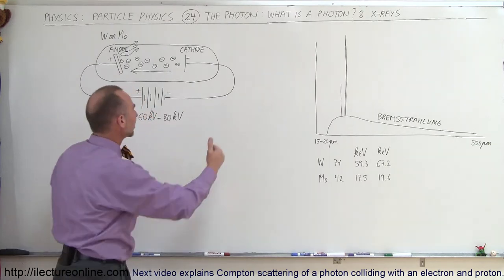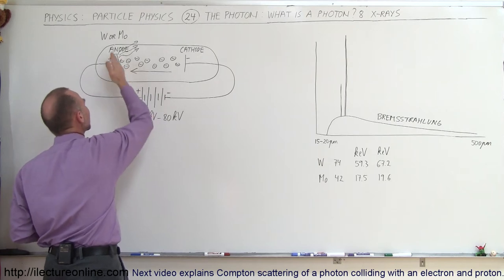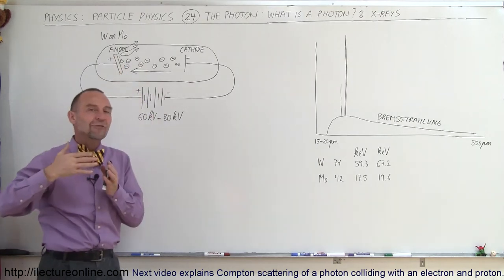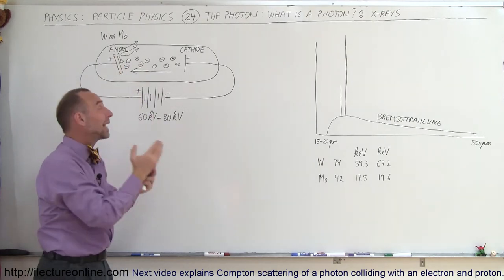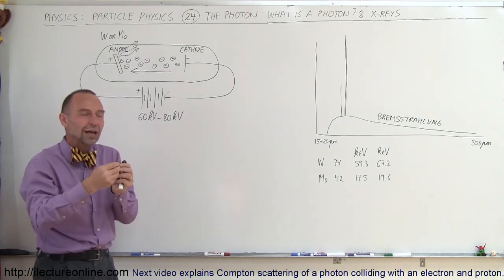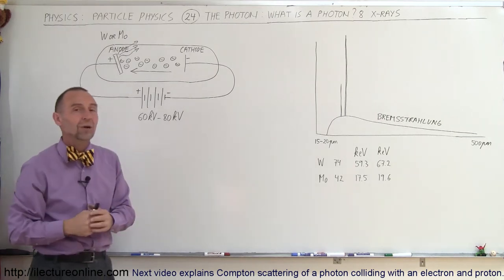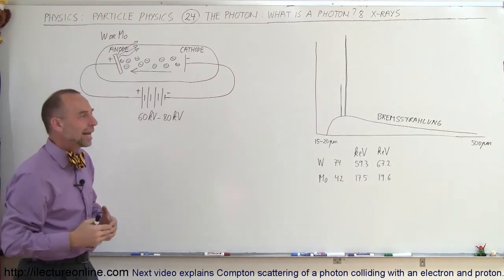And so, where that comes from is as electrons keep streaming in, they're going to be impacting the first layers of the anode, and they're going to be deflected by the nuclei of the atoms in the anode. As they're being deflected, they're going to be slowed down. As they slow down, they lose energy.